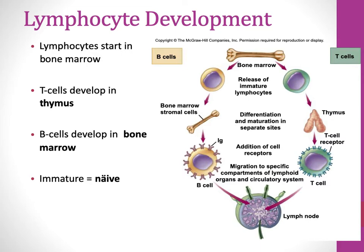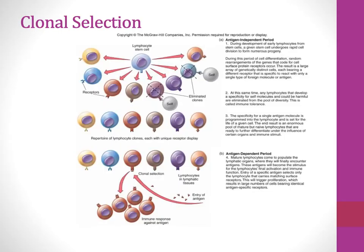There's a term called 'naive' — it means immature, meaning the cell hasn't seen its antigen yet. Once we see antigen, we can make copies — clones — of that cell. That red cell in the bottom panel has seen its antigen, so it makes clones of itself. We don't have to go all the way back to the hematopoietic stem cell; we can just make copies because we know the receptor combination is good since it's already seen its antigen.